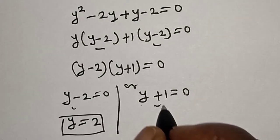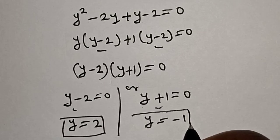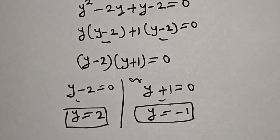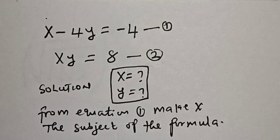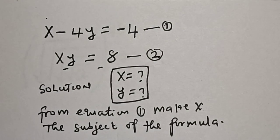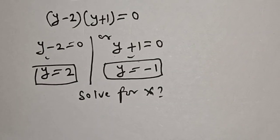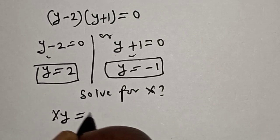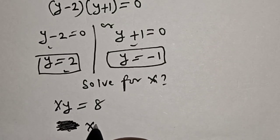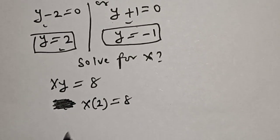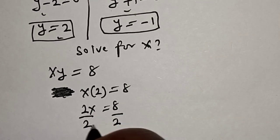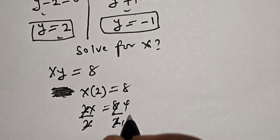From y plus 1 = 0, y is equal to minus 1. Now that we have y = 2 or y = -1, let's solve for x using equation 2. When y = 2, we have x times 2 equals 8, so 2x = 8. Dividing both sides by 2, x is equal to 4.